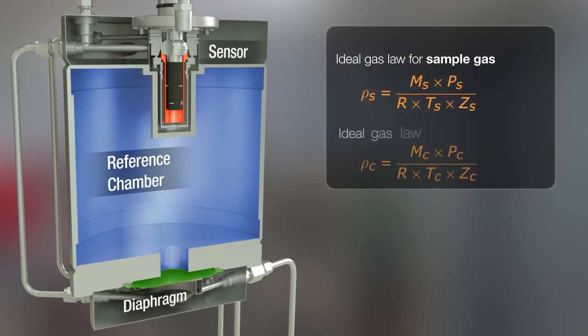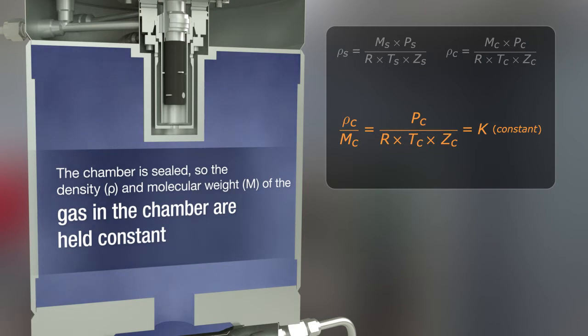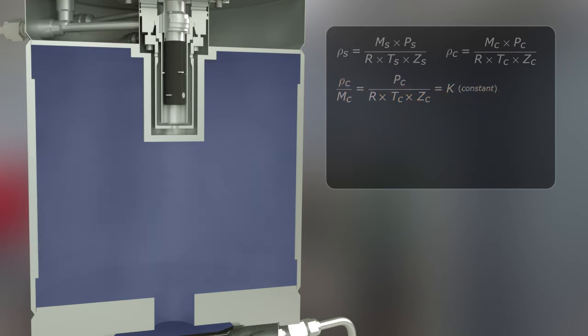Both the sample gas in the sensor and the reference gas in the chamber can be described with the ideal gas law. During commissioning, the reference chamber is filled and sealed off from the process, establishing a constant volume and quantity of gas to maintain a constant density and molecular weight. The reference gas is selected to match the compressibility factor of the sample gas during operation.